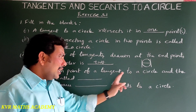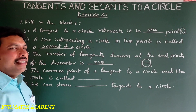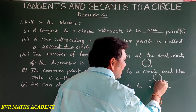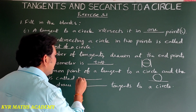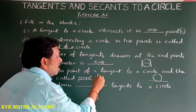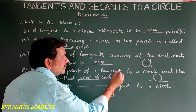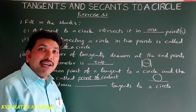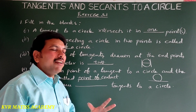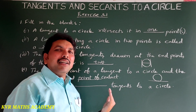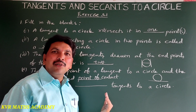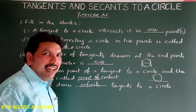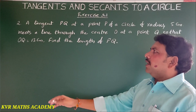Next: the common point of a tangent to a circle and the circle is called the point of contact. Next: we can draw how many tangents to a circle? There are an infinite number of points on the circle, so we can draw an infinite number of tangents to a circle.